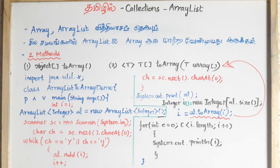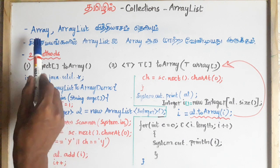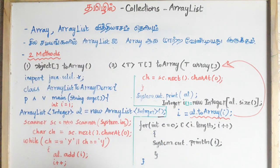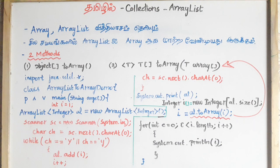Welcome to ArrayList. We will see how to create ArrayList. ArrayList is a dynamic array. ArrayList is a collection of objects and elements. Primitive and non-primitive types are stored in ArrayList.